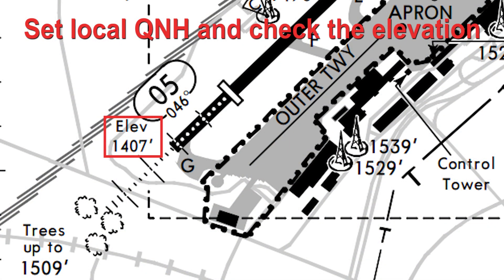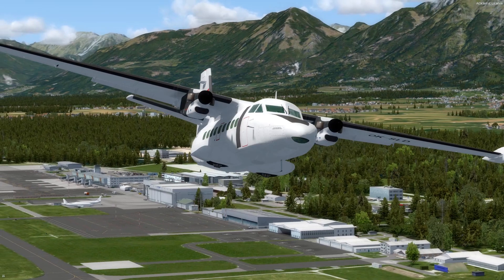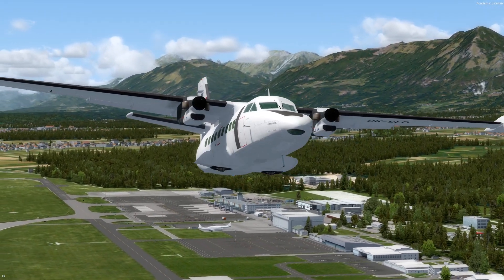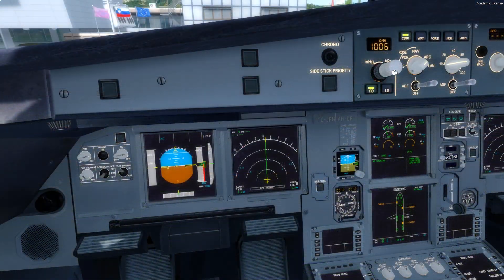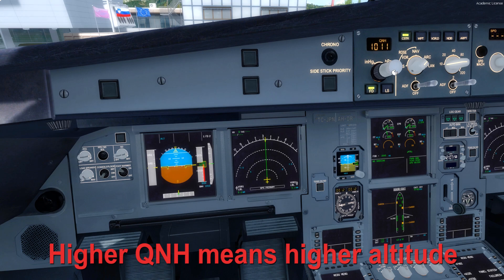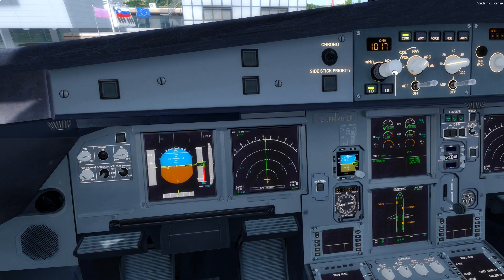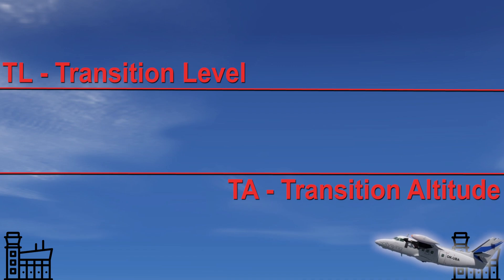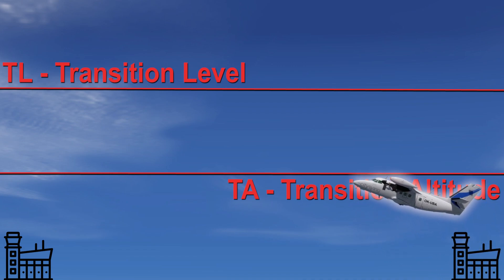To check if the QNH is correctly set, you can look at the charts to see the correct elevation of your position at the airport, and then check your altimeter which should show the same value as on the charts. If the value is too high, your QNH setting is also too high and you need to reduce it. If you are below the correct value, your QNH will need to be corrected and set a bit higher. The QNH setting is used at airports and at lower heights below the transition altitude.